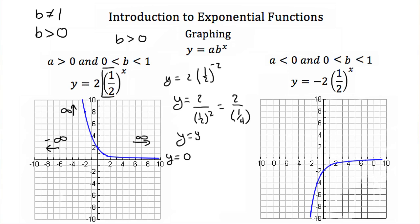When a is negative and b is between 0 and 1, for example y equal to negative 2 times one-half to the x, the graph is almost exactly the same but flipped over the x-axis. As x approaches negative infinity, y approaches negative infinity, and as x approaches positive infinity, y still approaches 0.